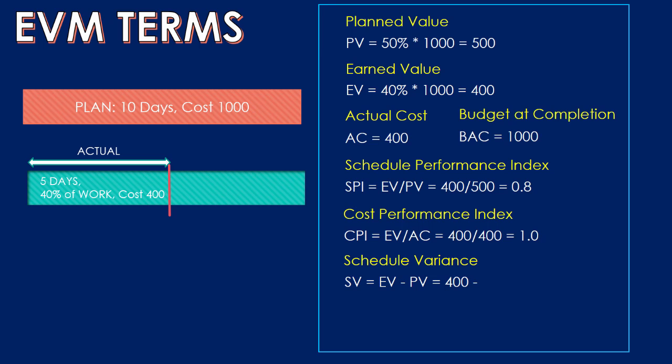We can also calculate variances. Schedule Variance (SV) is the difference between earned value and planned value — it measures the amount by which the project is ahead or behind the plan. A negative value means behind plan; a positive value means ahead of plan. Cost Variance (CV) is the difference between earned value and actual cost — it measures how much the actual cost is ahead or behind the planned cost. A negative value means we are over budget; a positive value means we are under the planned cost.